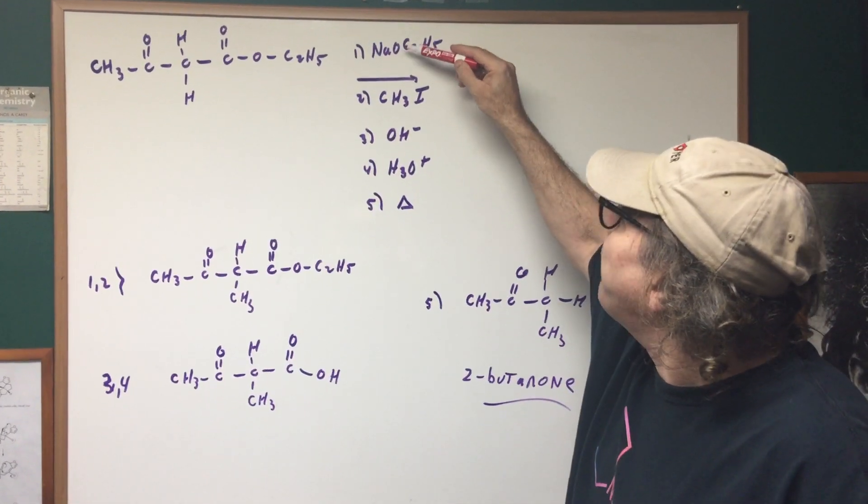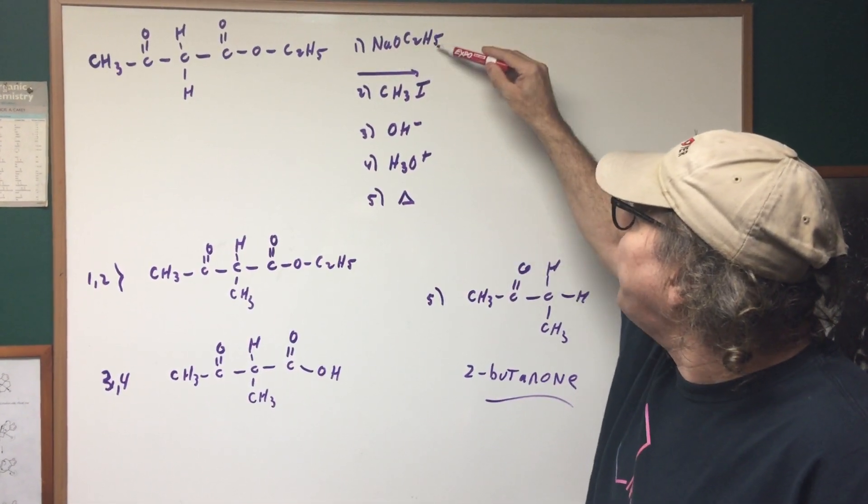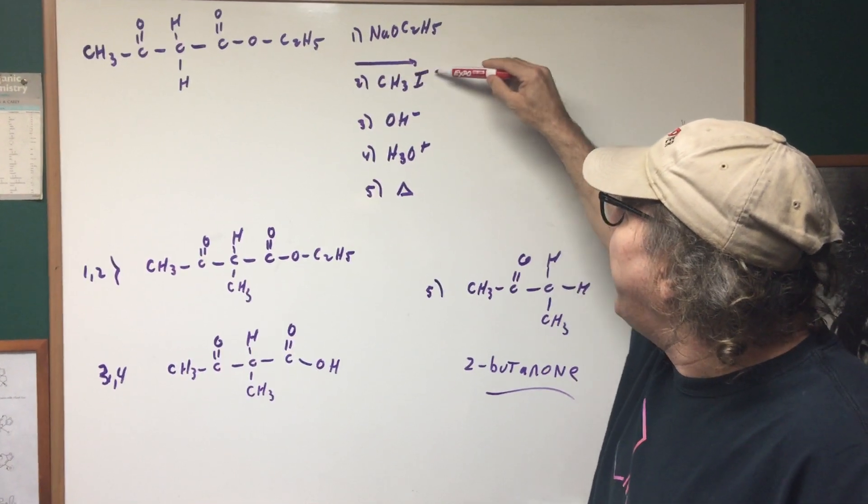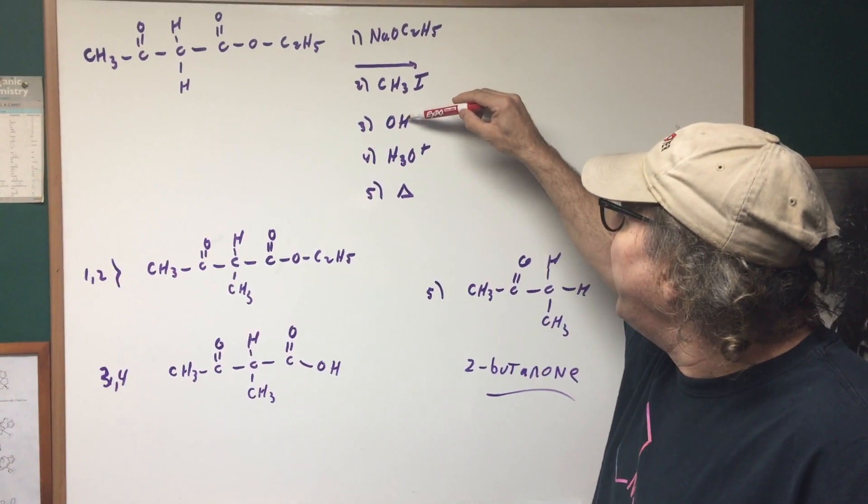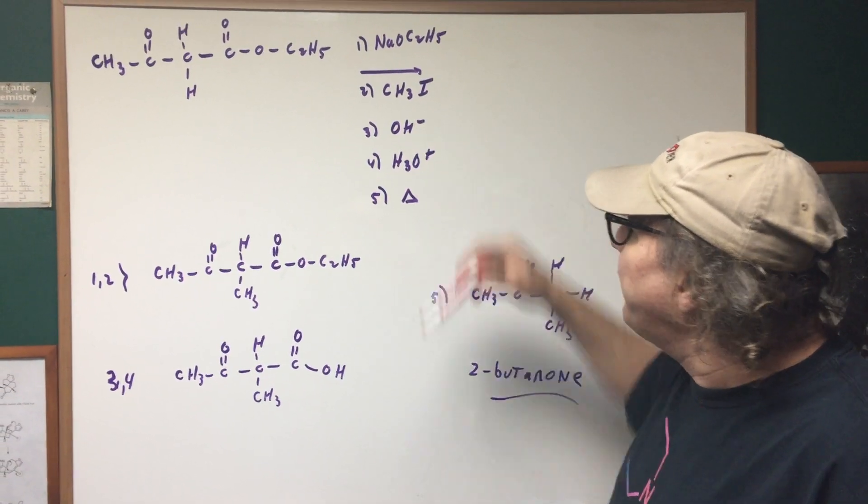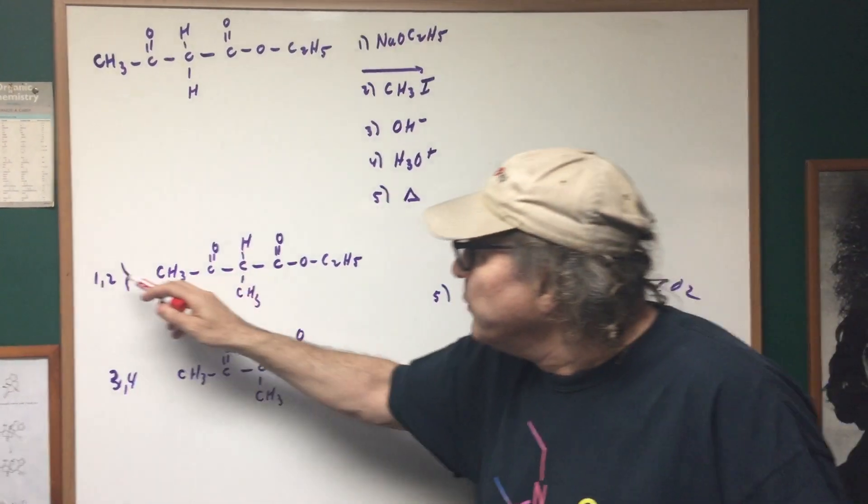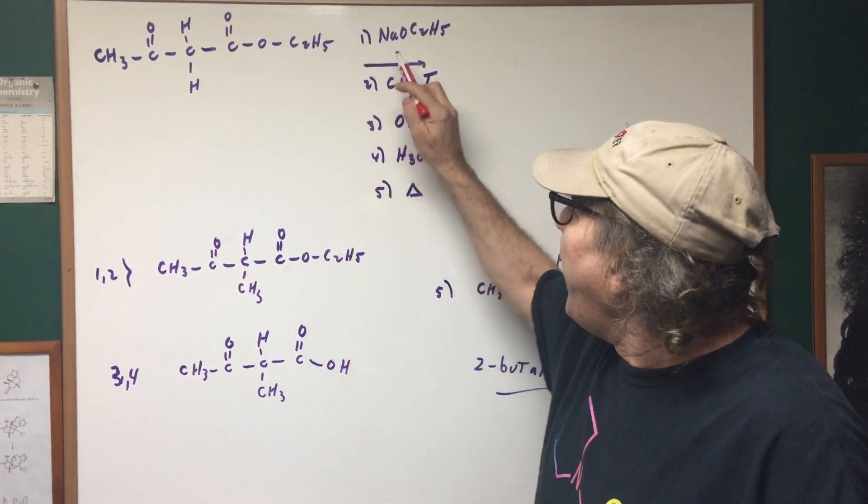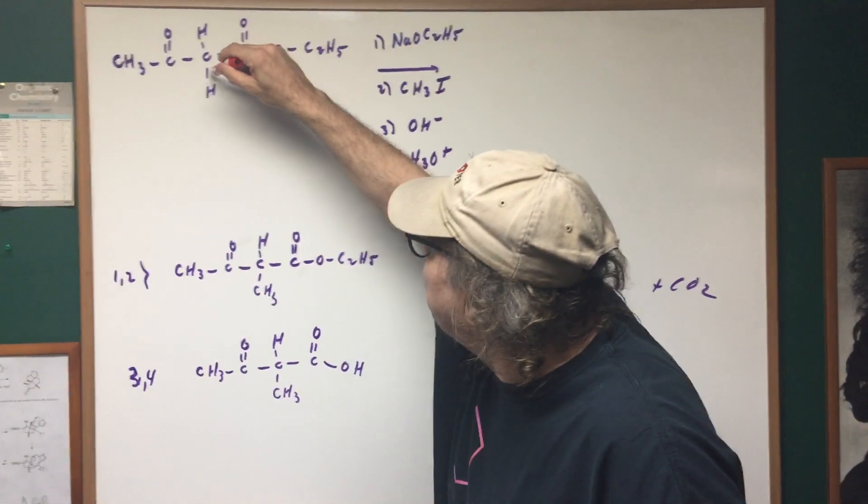I'm gonna take this molecule and I'm gonna do five things. I'm gonna treat it with sodium methoxide, then I'm gonna add CH3I, then base, acid, and then I'm gonna heat it up. Let's do step one and two together. NaOCH2CH3, what's that gonna do?